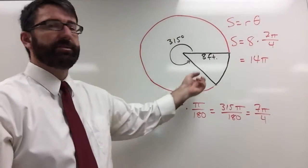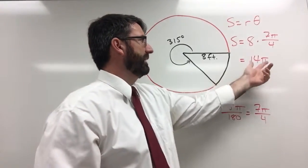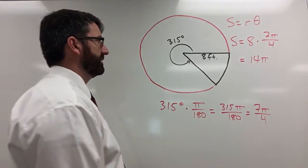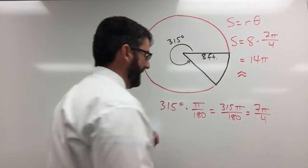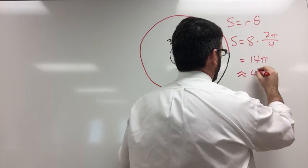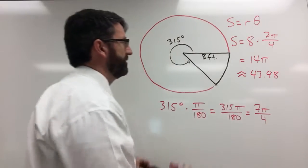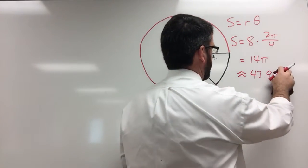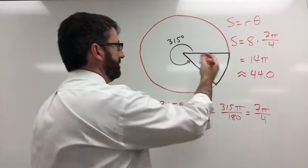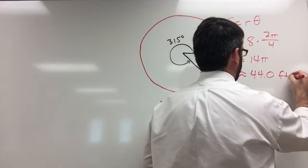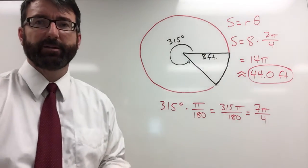Now it says to round this to the nearest tenth, so I'm guessing that they want a decimal approximation of this answer. So let's plug this into our calculator. We're going to get that 14 pi is approximately equal to 43.98, which if we round it to the nearest tenth, that's going to be an even 44.0. And that would be feet. So 44 feet all the way around that arc length.